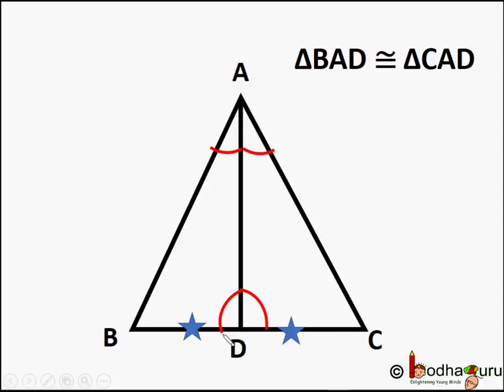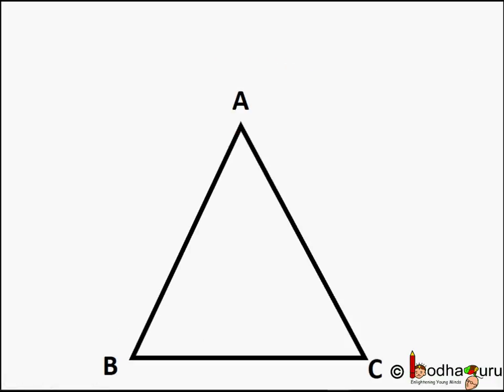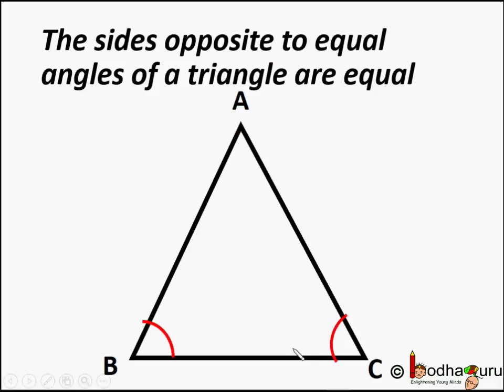So bisector of angle A is perpendicular bisector of BC. This can be helpful in proving the opposite theory of what we just proved. The sides opposite to equal angles of a triangle are equal.